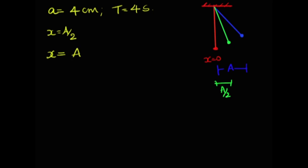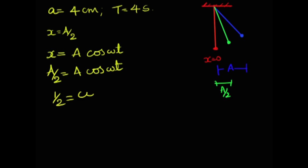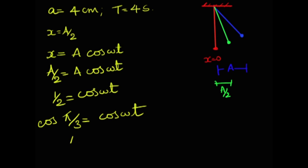The equation describing this motion starting from the extreme point is x = A cos(ωt), because at t = 0, cos(0) = 1, giving x = A. Setting x = A/2, we get A/2 = A cos(ωt), so A cancels and we get 1/2 = cos(ωt). Since cos(60°) = cos(π/3) = 1/2, we have π/3 = ωt.